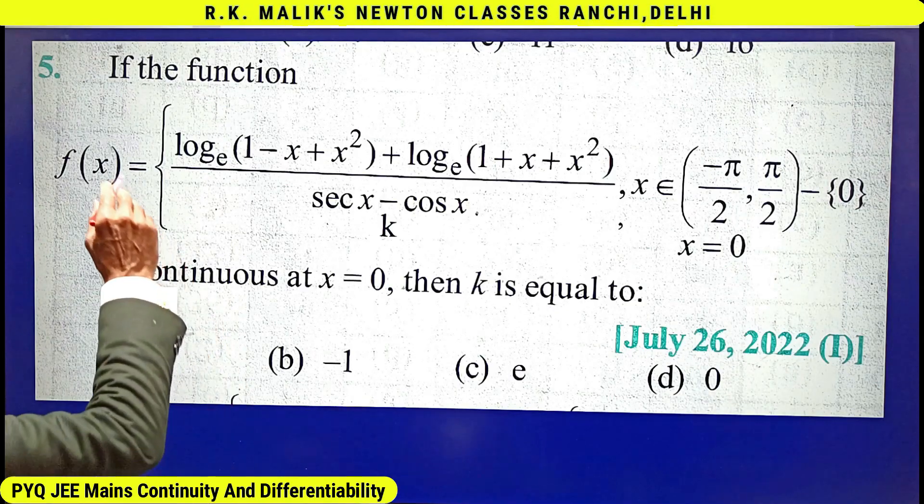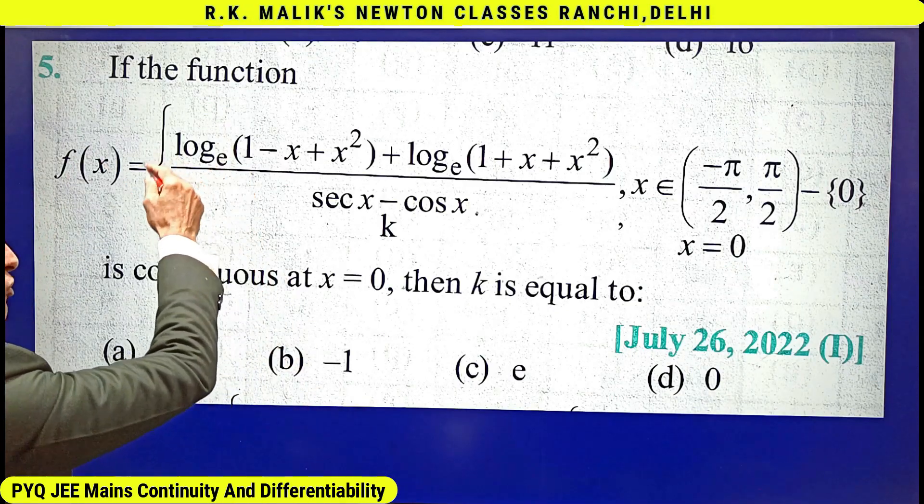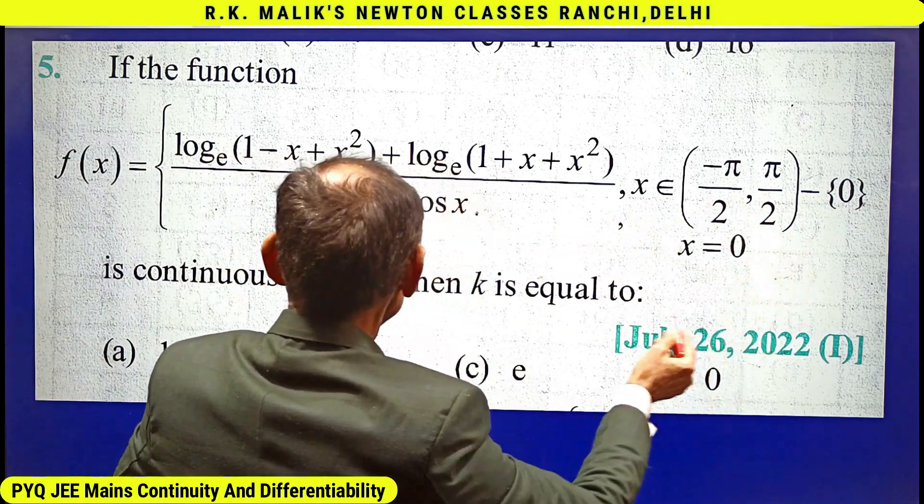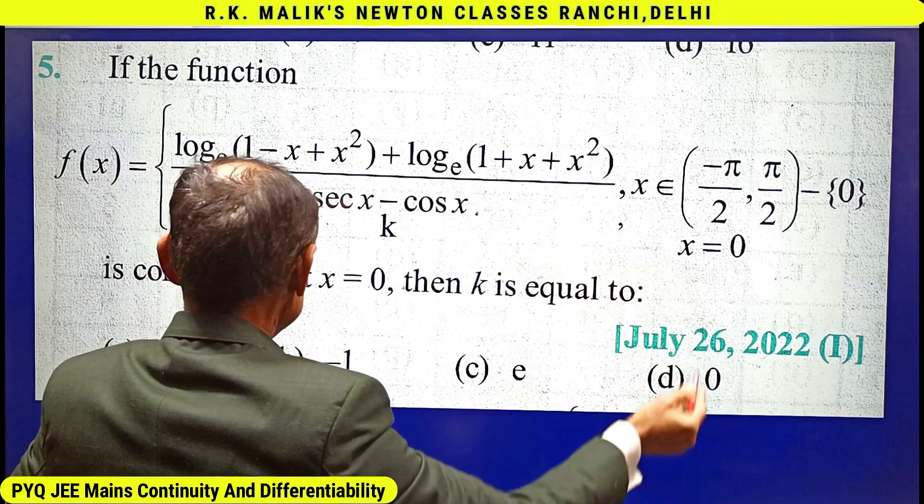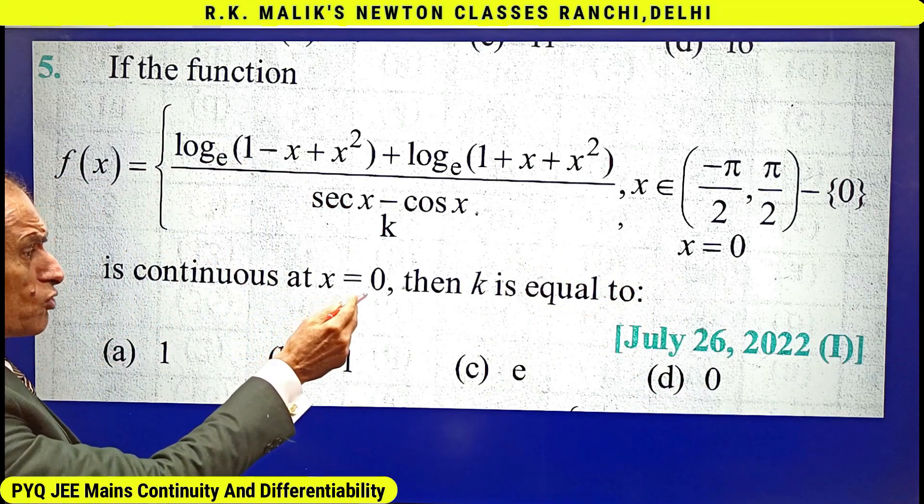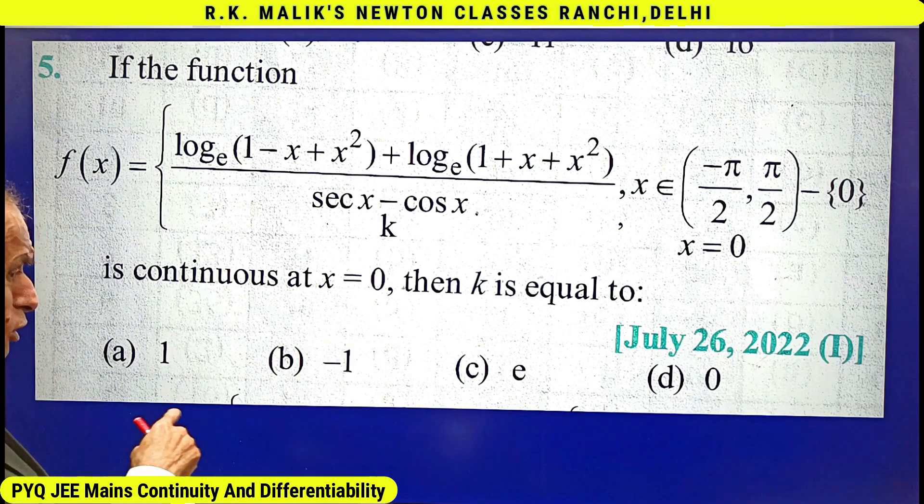In this question, it is given that if the function f(x) equals this expression when x belongs to this interval, and k if x equals zero, is continuous at x equals zero, then k is equal to—you have to find the correct choice.